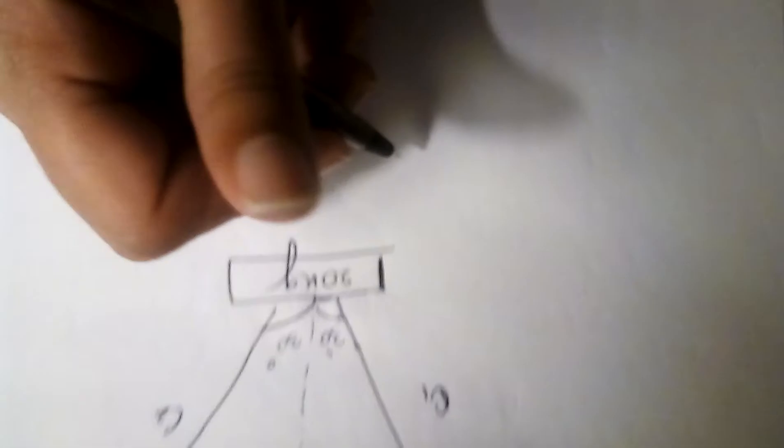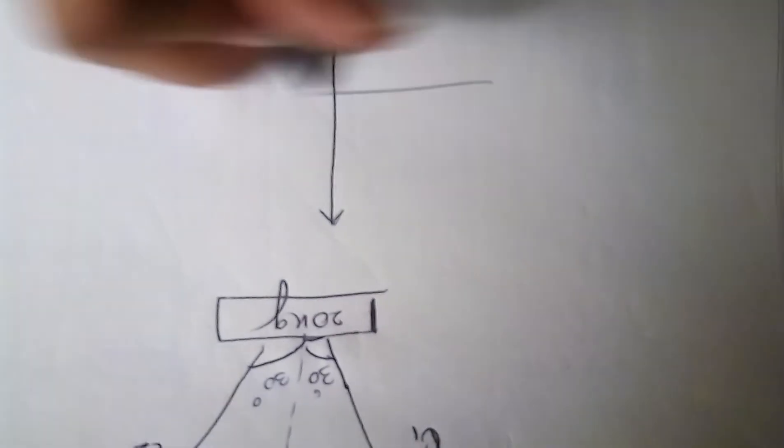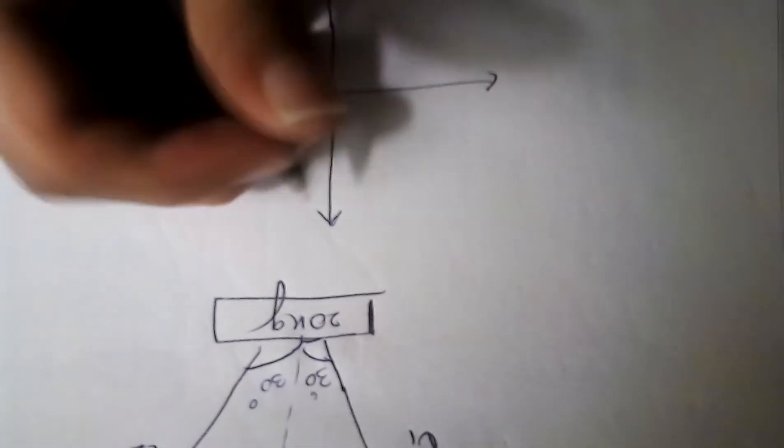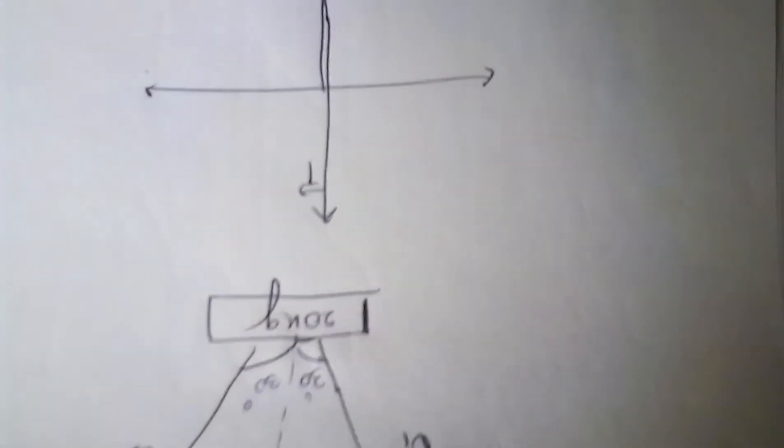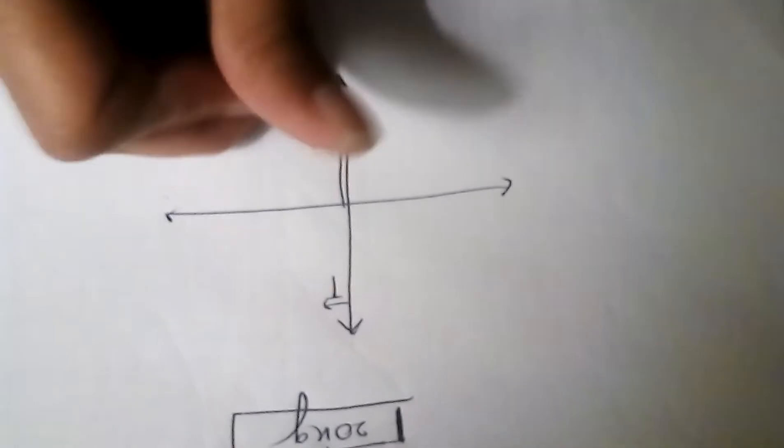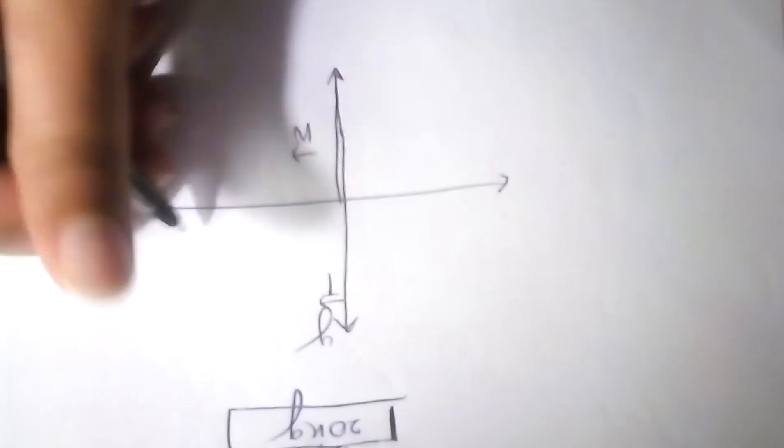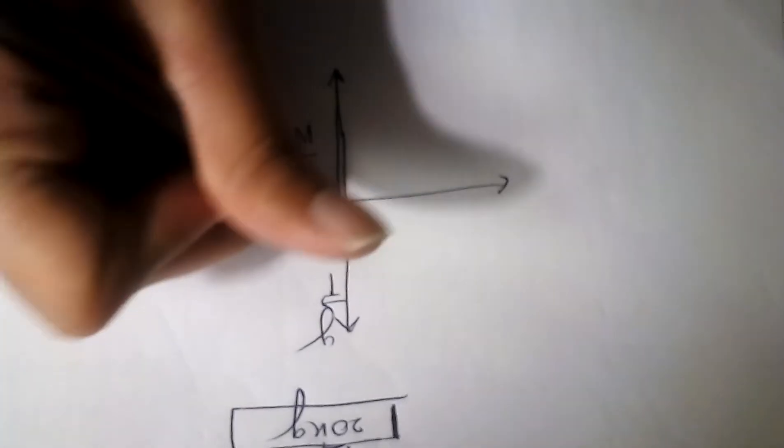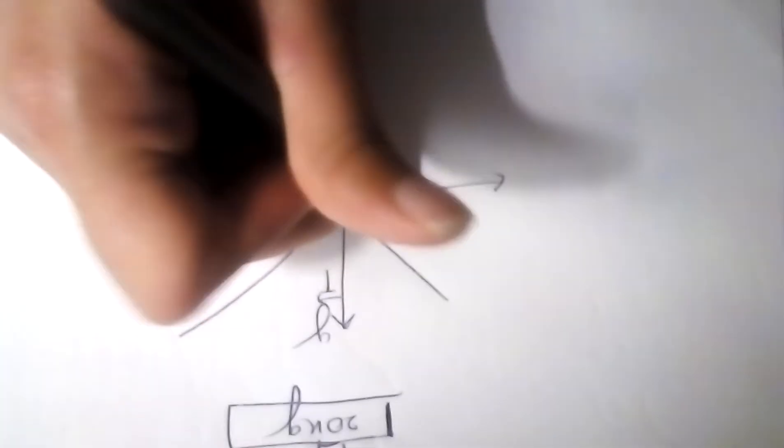Let's draw a free body diagram for this. Since they are hanging, there should be tension force which is upwards, there should be a weight force which should be downwards. This is your W, that will be your axis. You also got your angles, 30 degrees from both sides.